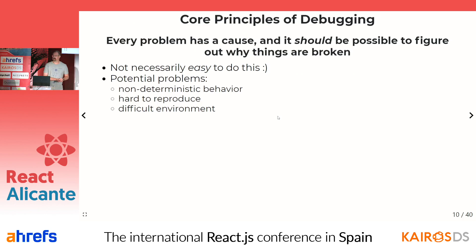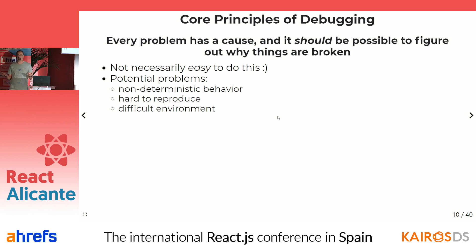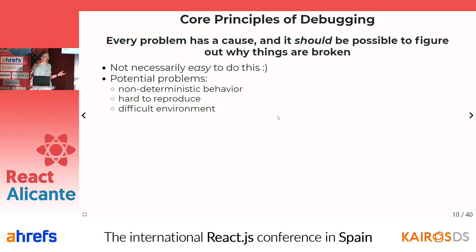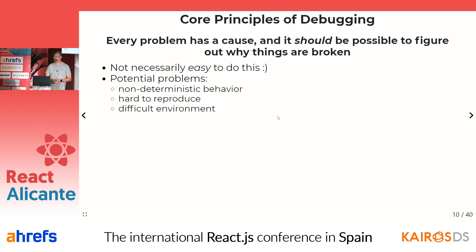So let's talk about some core principles of debugging — and again, a lot of this is very generic, not specific to JavaScript. The first principle is that every problem has a cause, and it should be possible to figure out what actually went wrong and hopefully how to fix it.